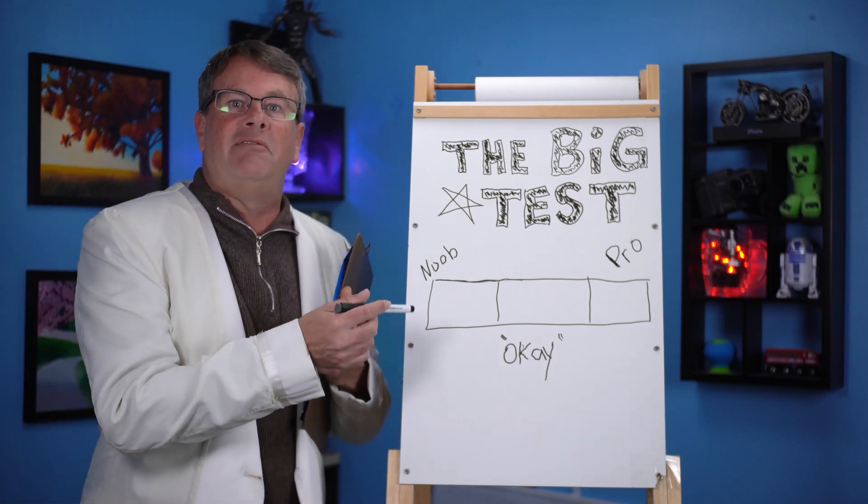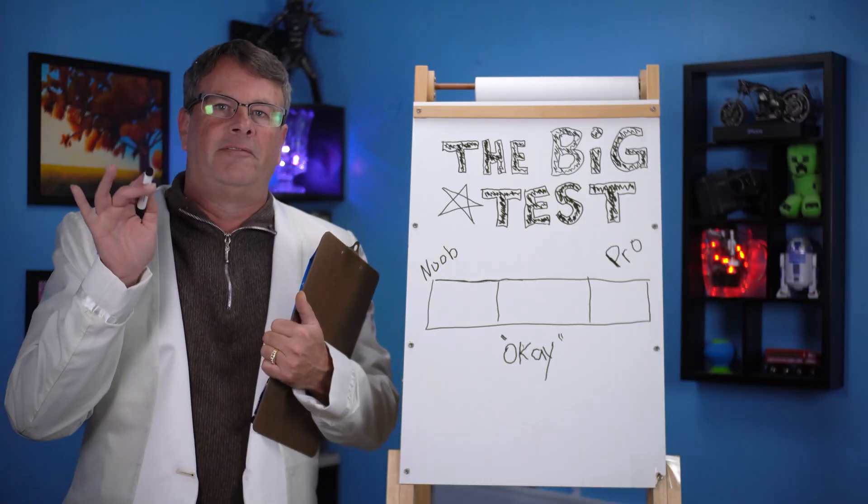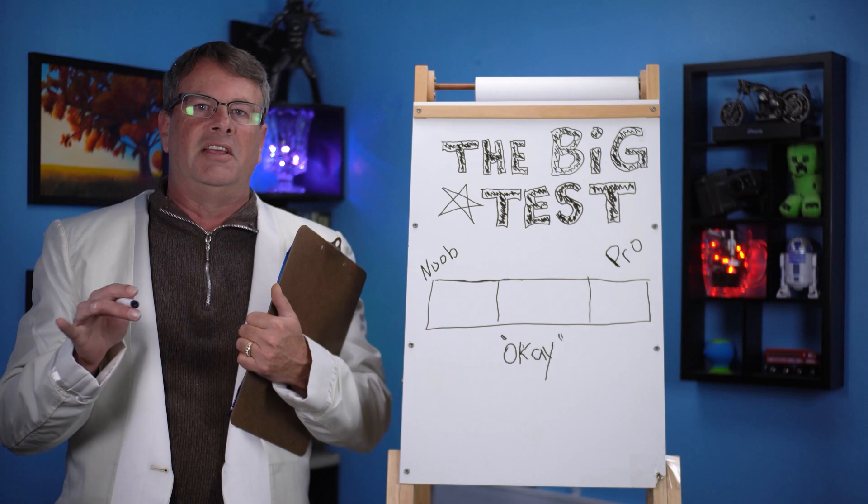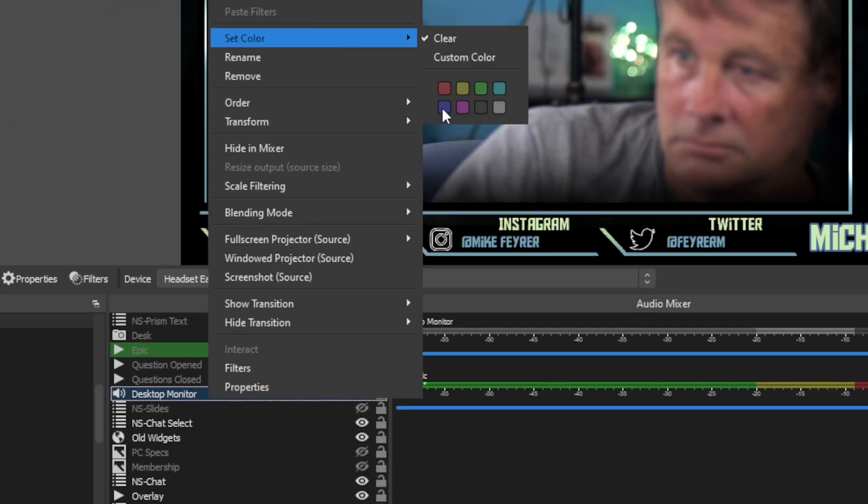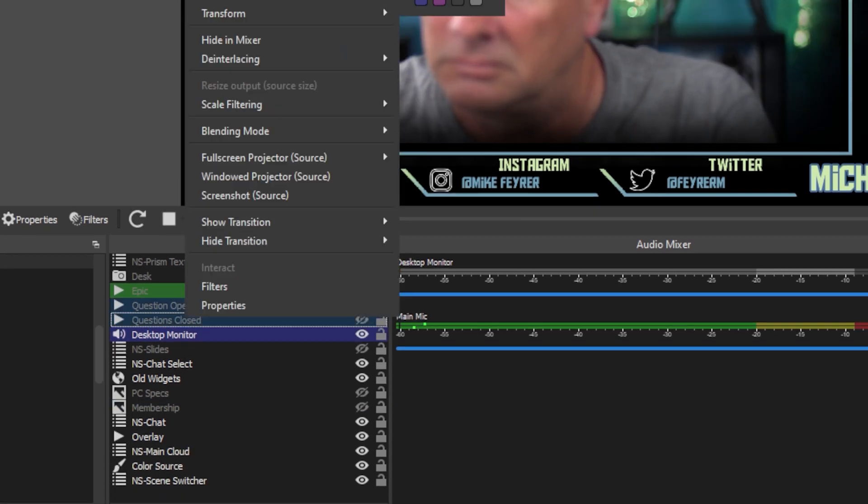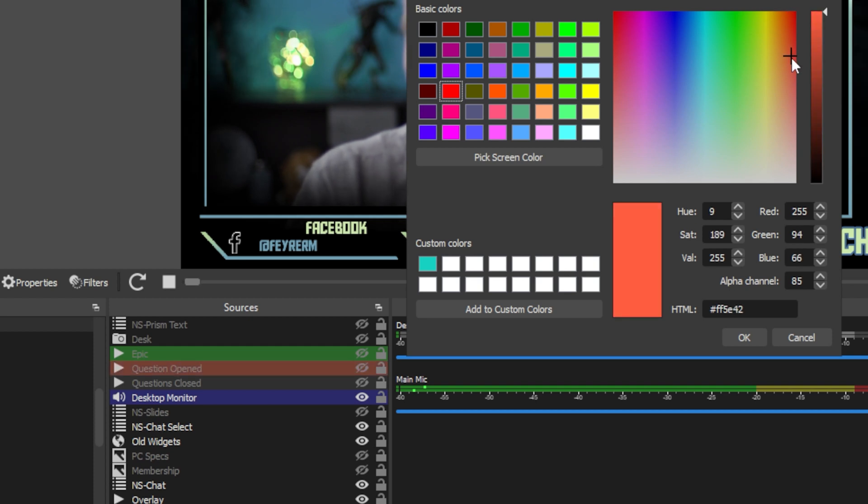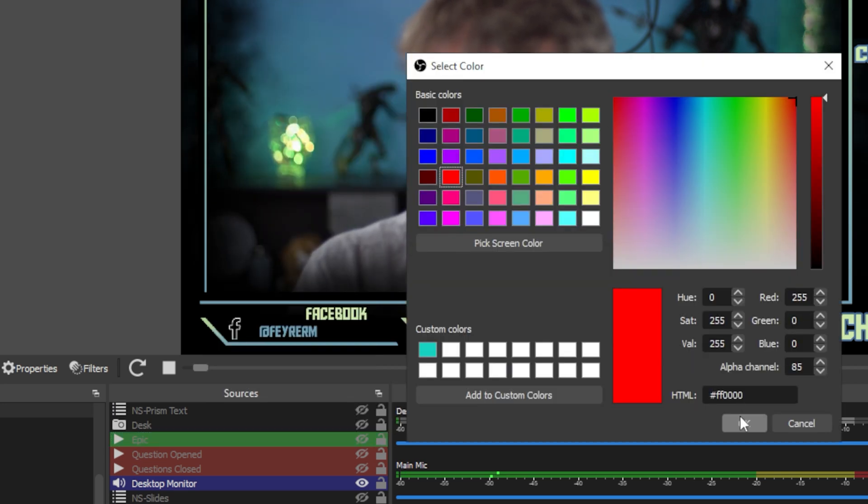Now, let's start with the five noob tips or the beginner tips. Nothing is more frustrating than a full source list where everything looks exactly the same. And that is why I color label my sources, creating a structure in my entire source list. For example, my audio is going to have a blue color while my static assets like graphics or overlays are going to be orange. The browser source alerts will be yellow and so on.